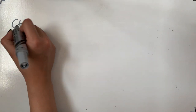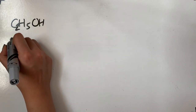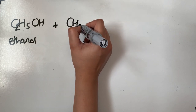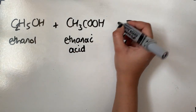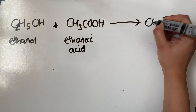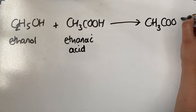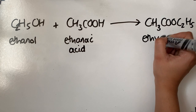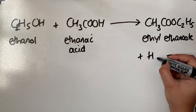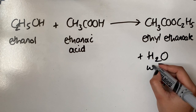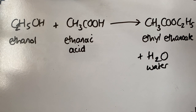So you have ethanol reacting with ethanoic acid — this reaction is an esterification reaction. Ethanol is C2H5OH, reacting with ethanoic acid. Don't worry at this stage if you don't really know what esterification is — you would cover that in the second year. The ester formed is ethyl ethanoate, and it also produces a water molecule as well. So that's the balanced equation for question number three — you can do the calculation part yourself.